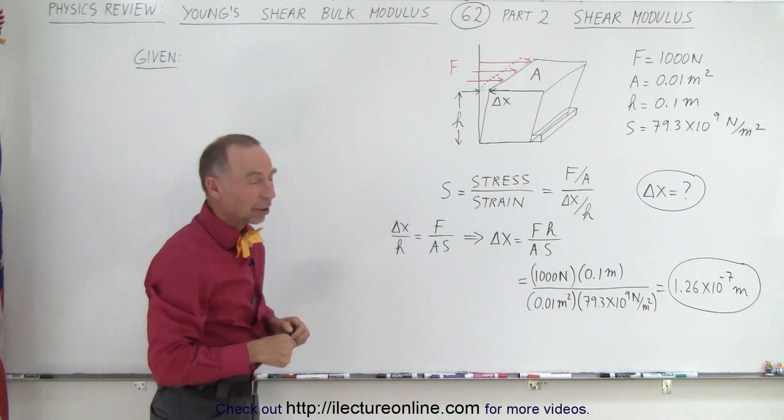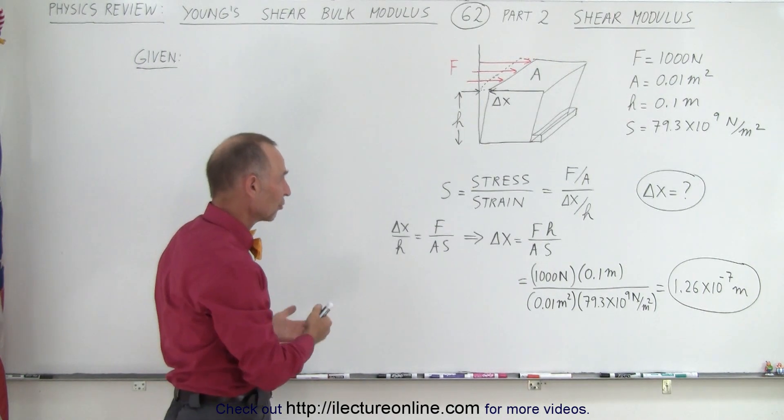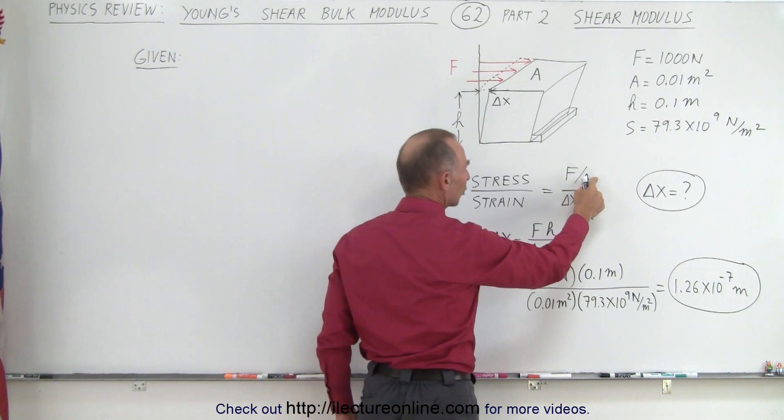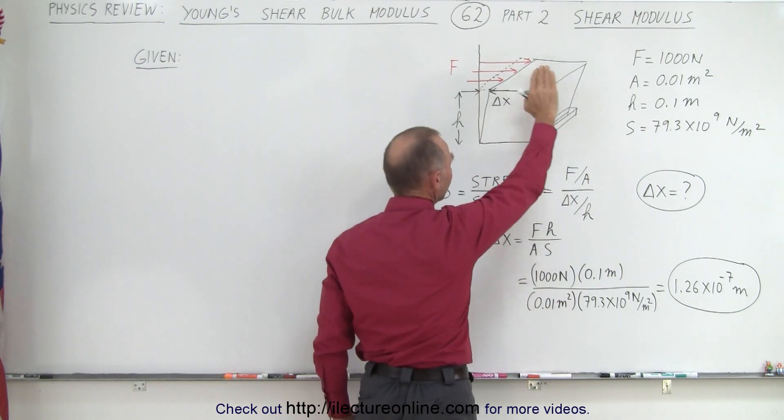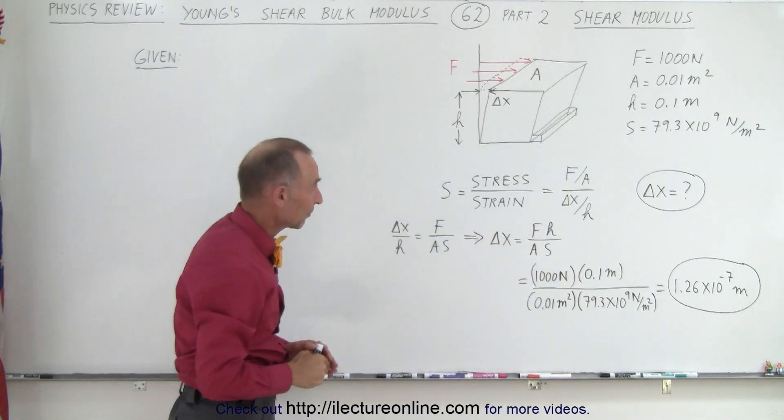And so again we call that the shear modulus and it's the ratio of the stress over the strain. Now the stress is the force applied divided by the cross-sectional area over which it applies. In this case, the cross-sectional area is the area of the top of the object.